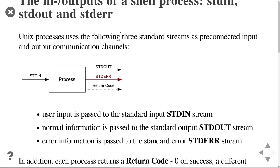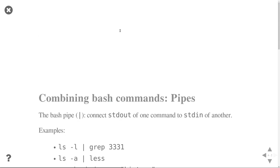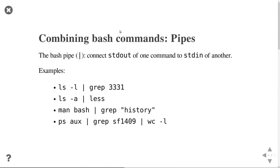The last thing I explained was the idea of inputs and outputs of processes. Now I'm going to show you how you can use that to combine bash scripts. What you need for that is called a pipe - literally a pipe that connects the inputs or outputs of programs. The syntax is just this vertical line, and it connects the standard output of one command to the standard input of another.